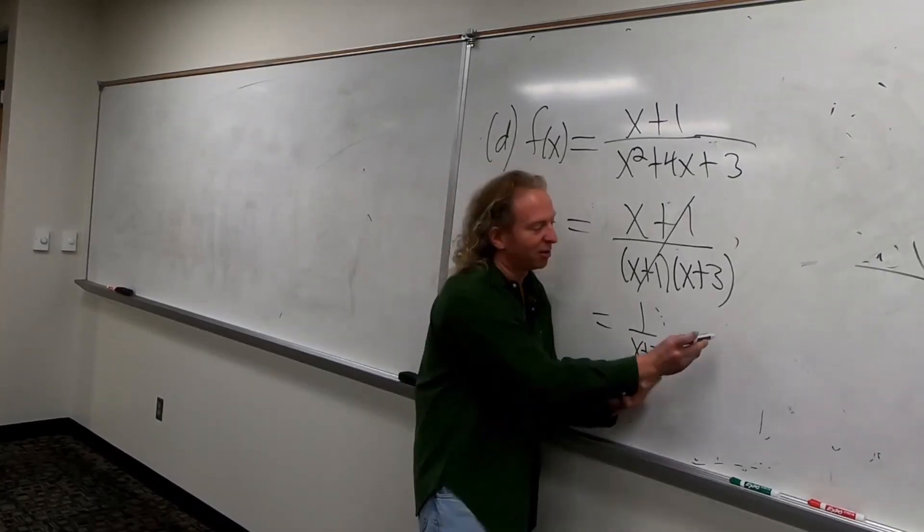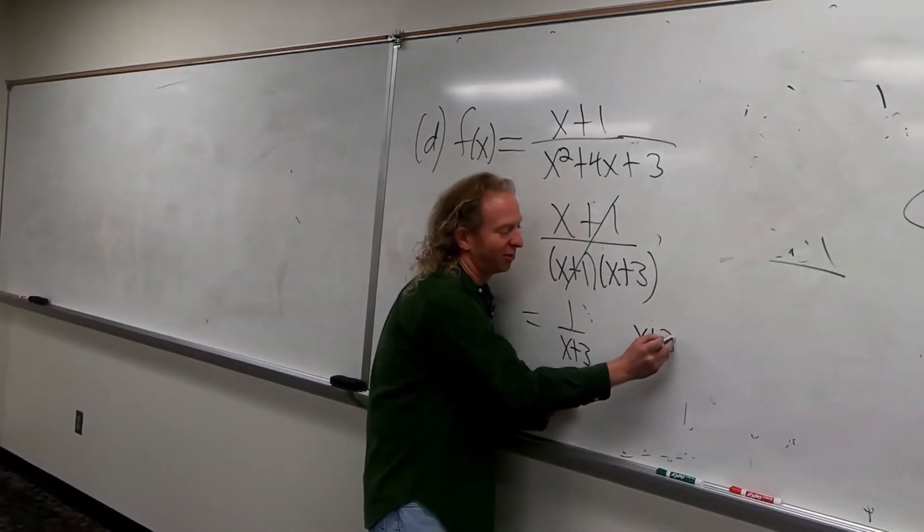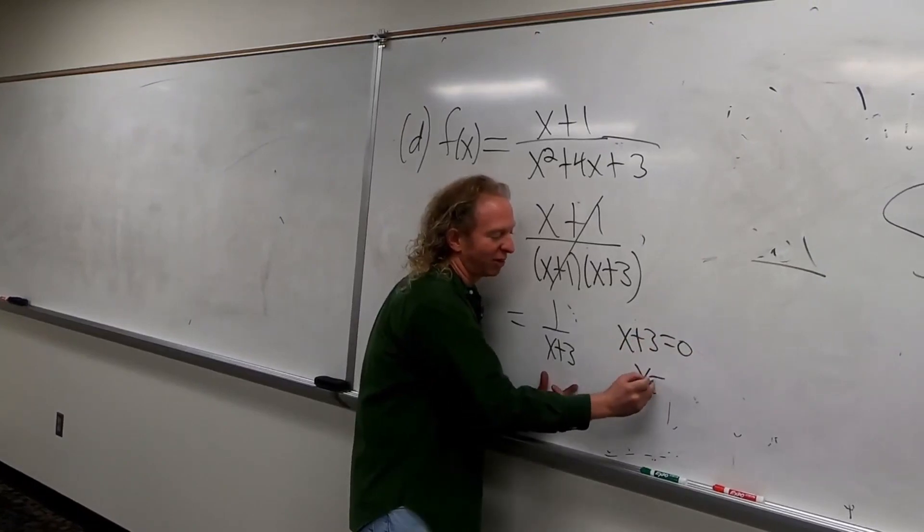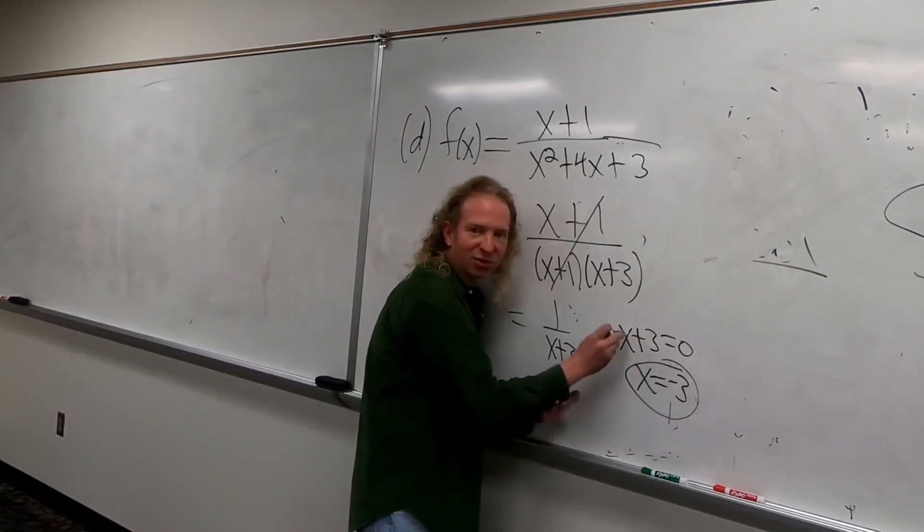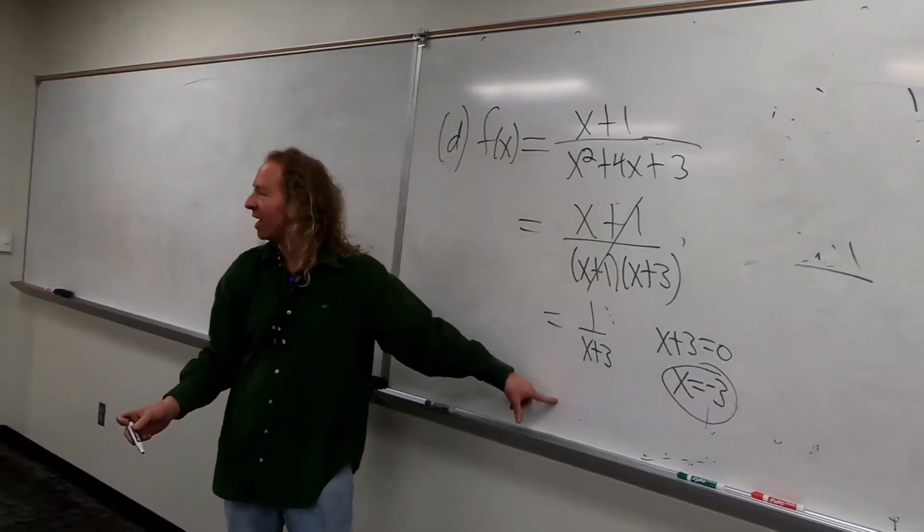Then you set the bottom equal to 0, so you get X plus 3 equals 0, so you get X equals negative 3. It's really important to have the X equals in this case, because it's a vertical asymptote.